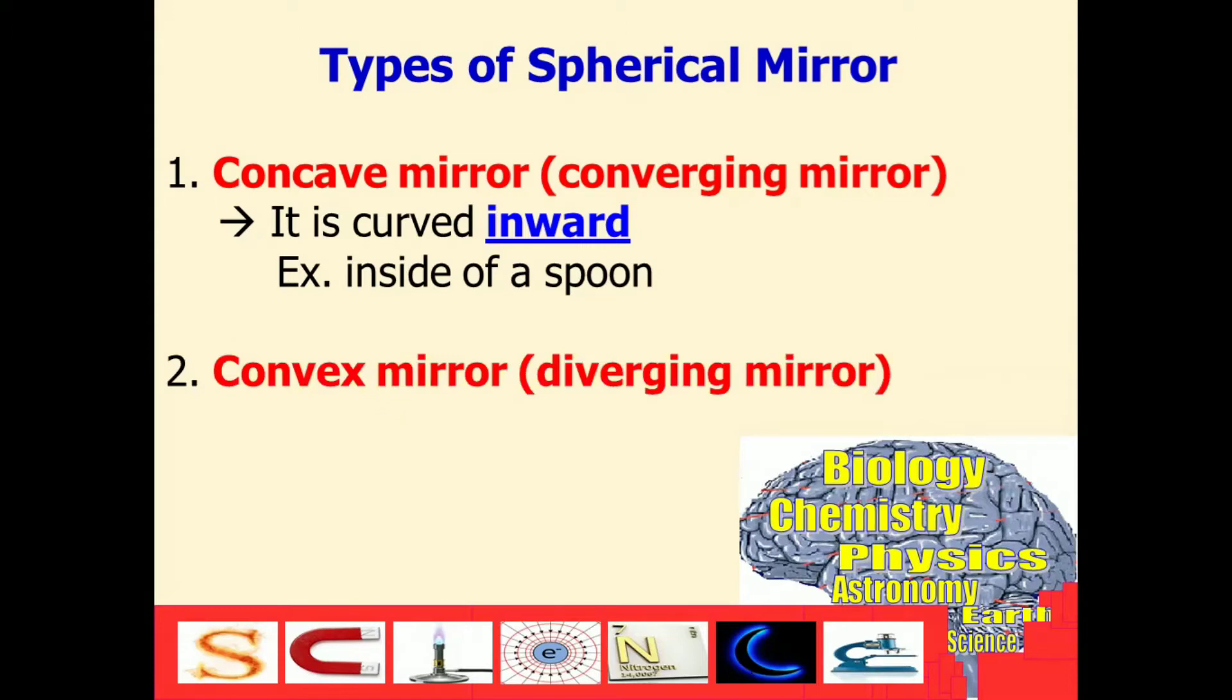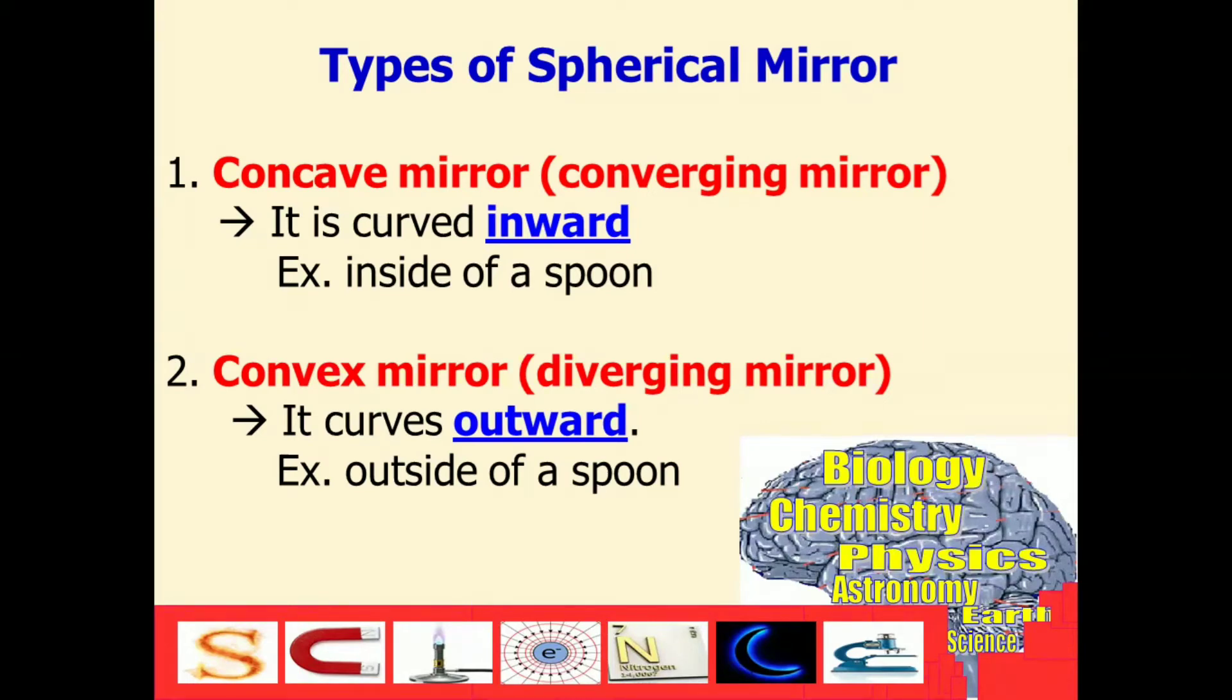The second type is the convex mirror, also known as the diverging mirror. It is the opposite of concave mirror. It has an outward curve, and the best example of this is the outside of a spoon.